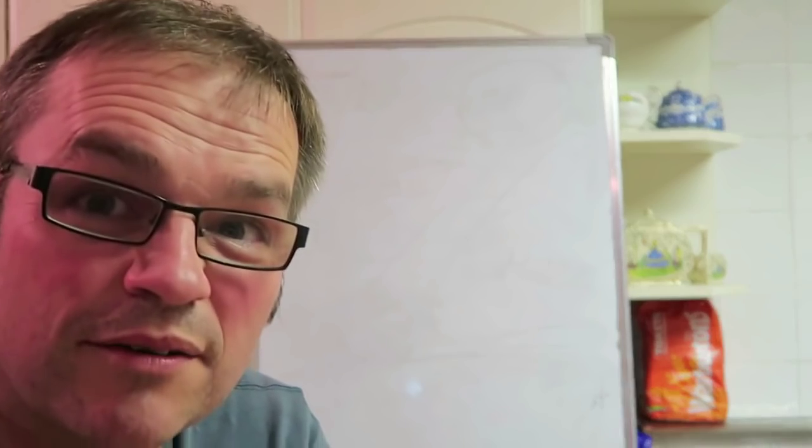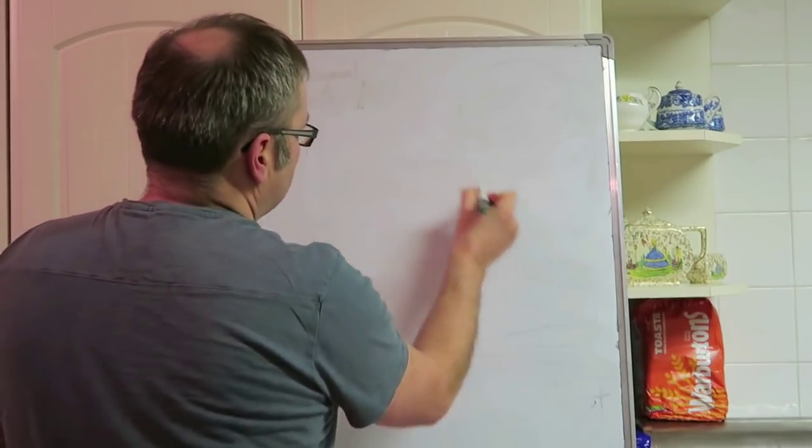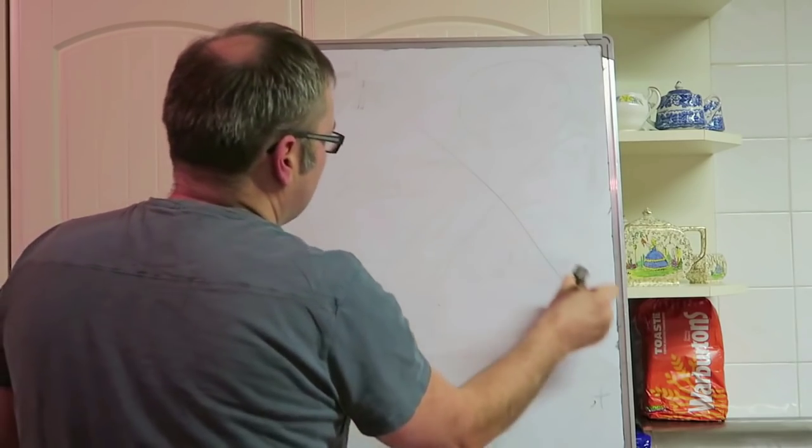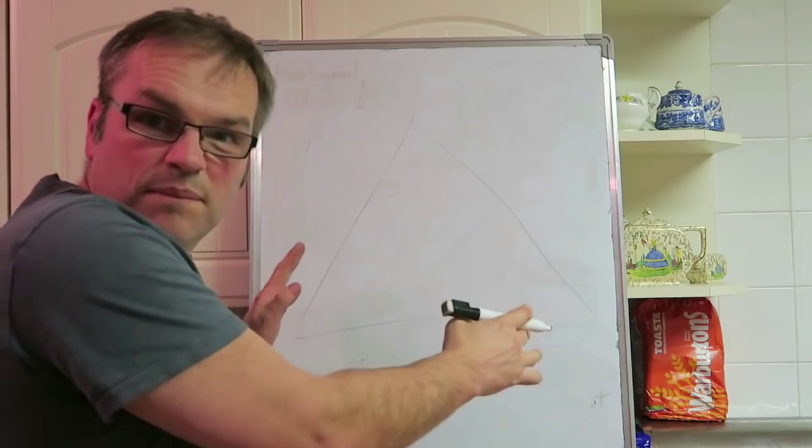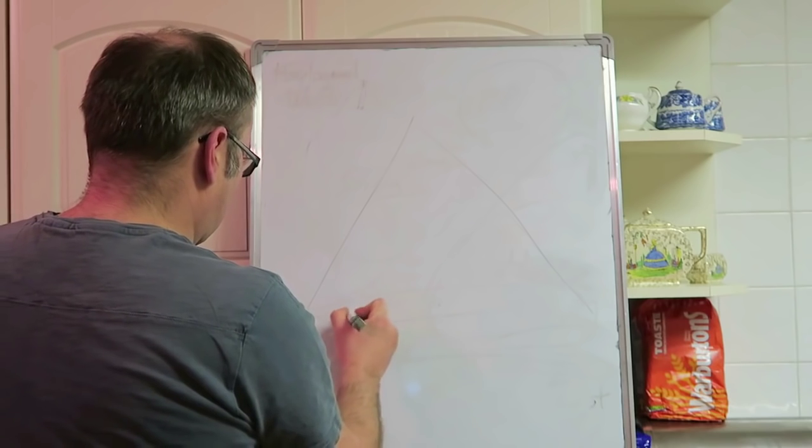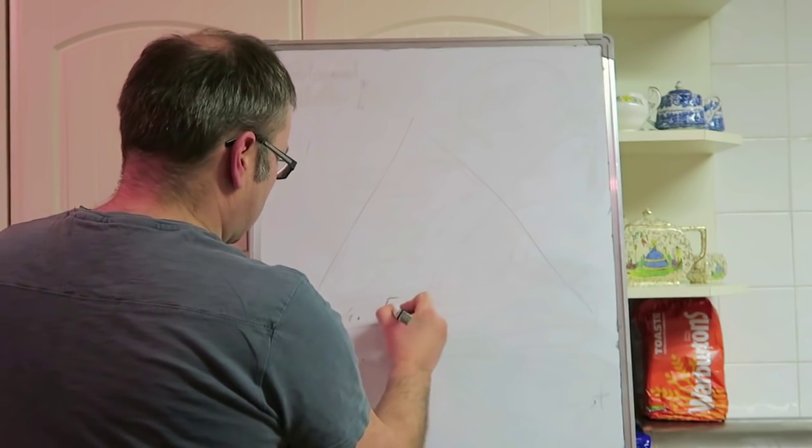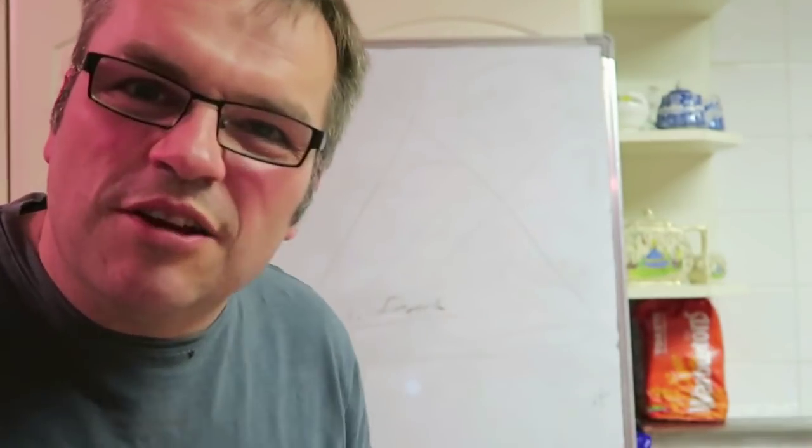There's another tier system we should worry about, and that is the watch collector tier system. You basically have a triangle. Watch collectors - you have people down here, the biggest group of people, who are in your Seikos, Vostoks, that sort of stuff. They're getting into it, they're buying loads and loads of stuff.